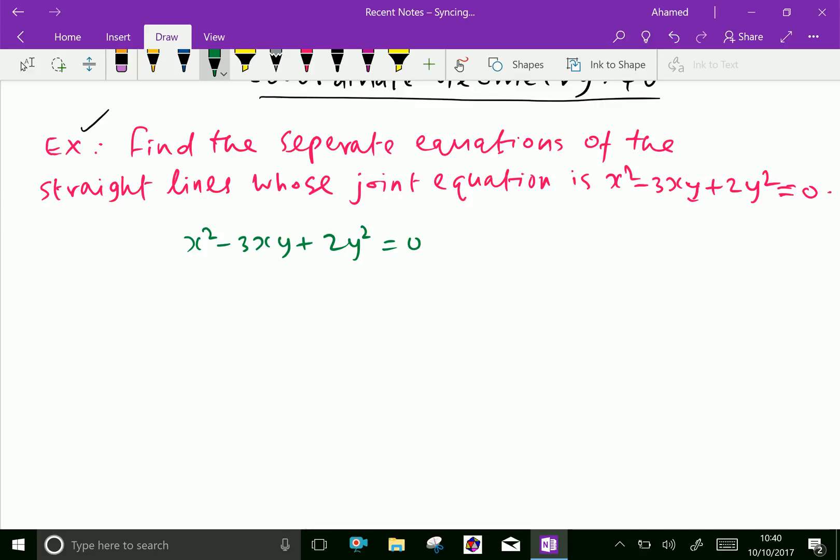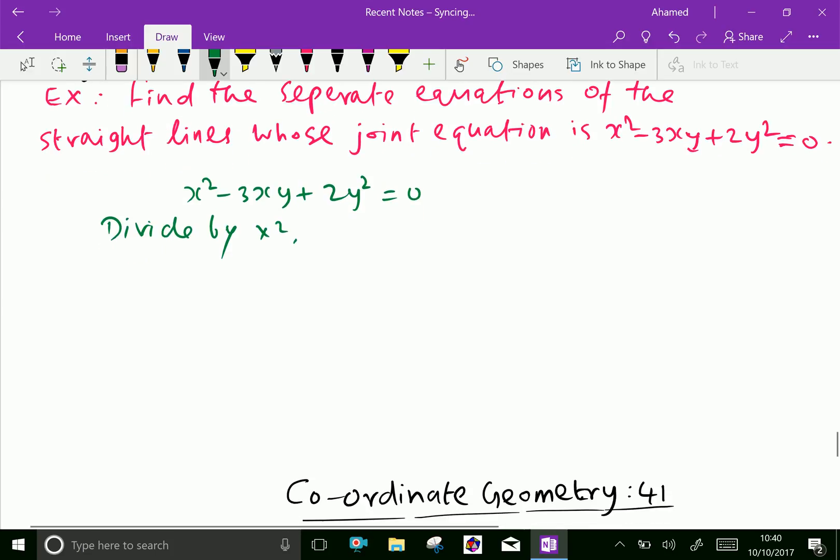Divide by x squared both sides. Divide by x squared we get x squared by x squared plus that is minus 3xy over x squared plus 2y squared over x squared equals 0. Then 1 minus 3y over x plus 2y over x whole squared.